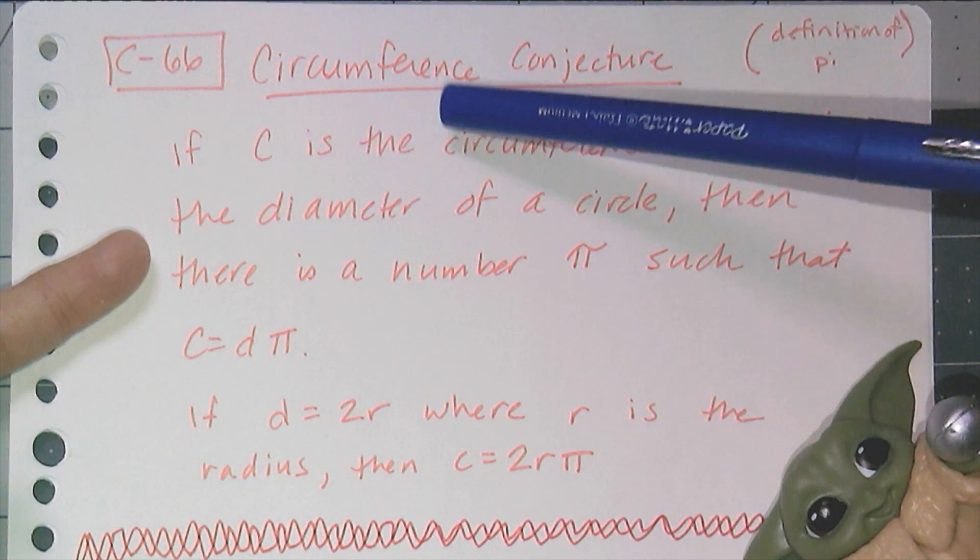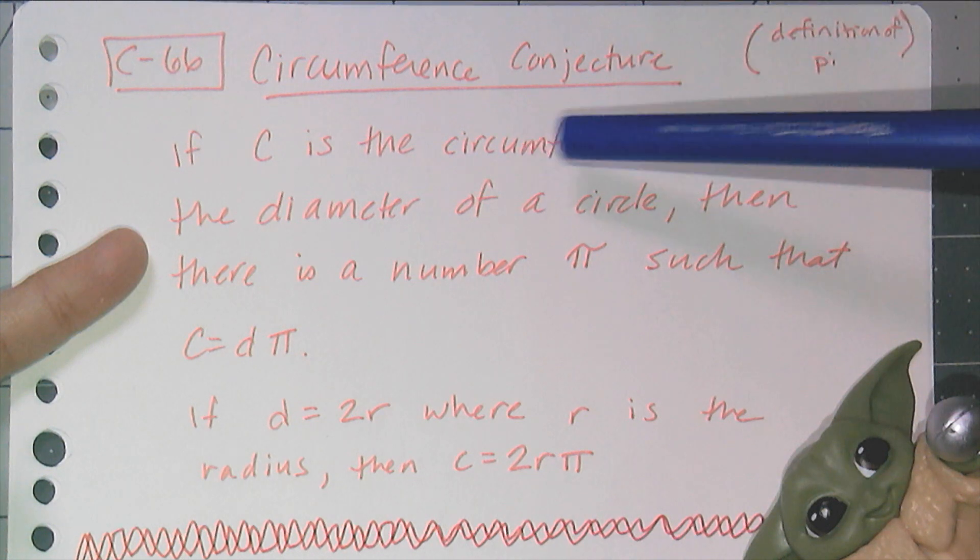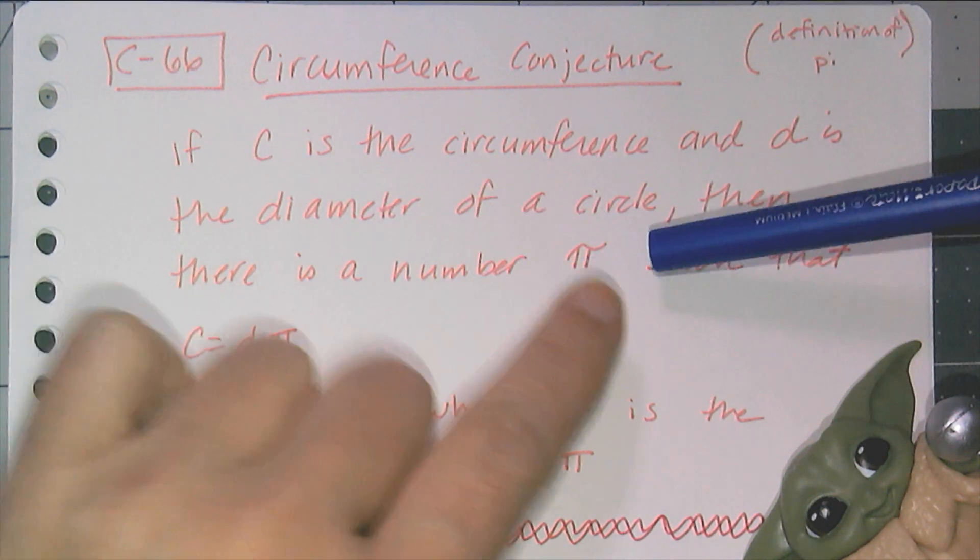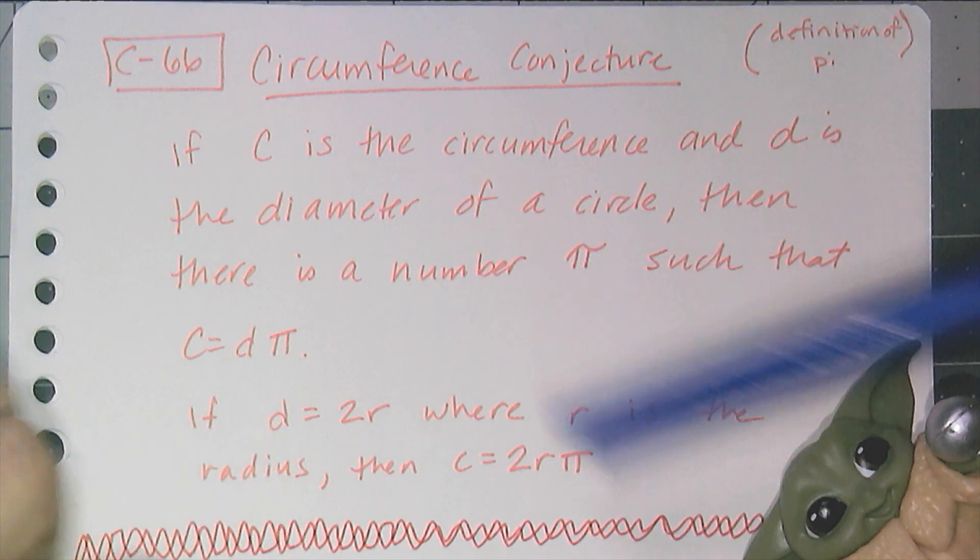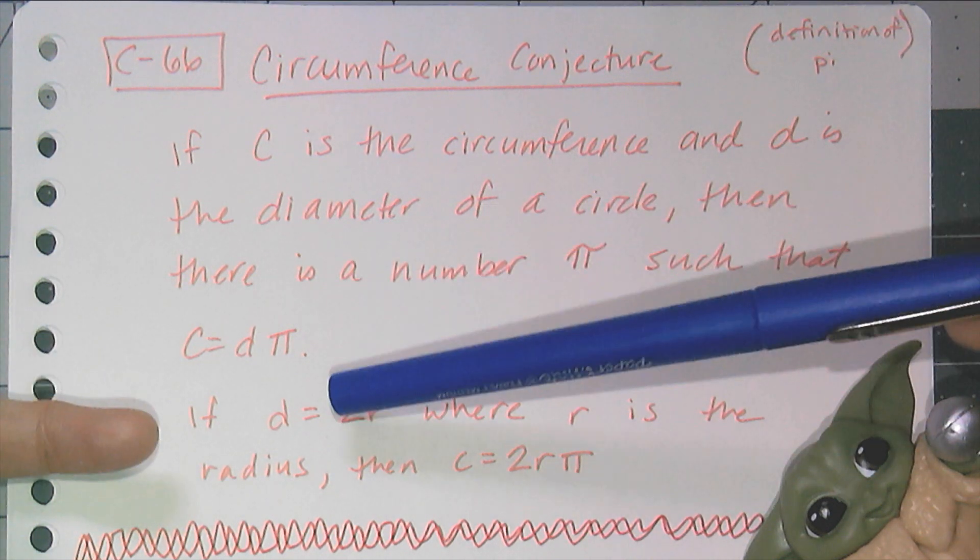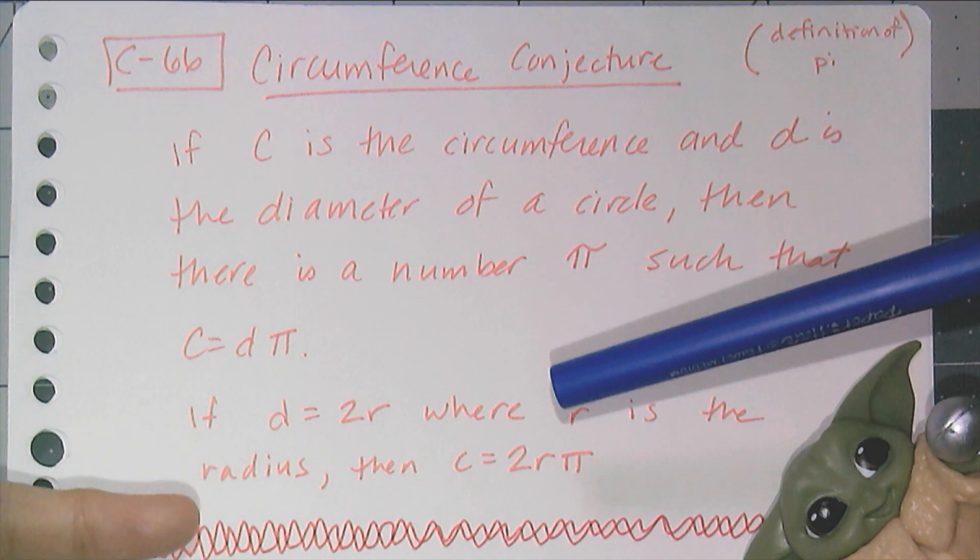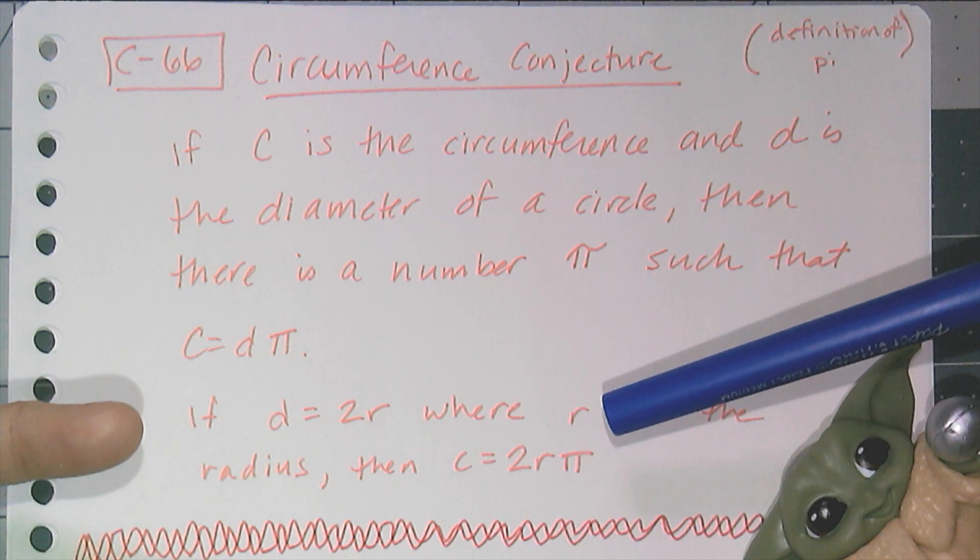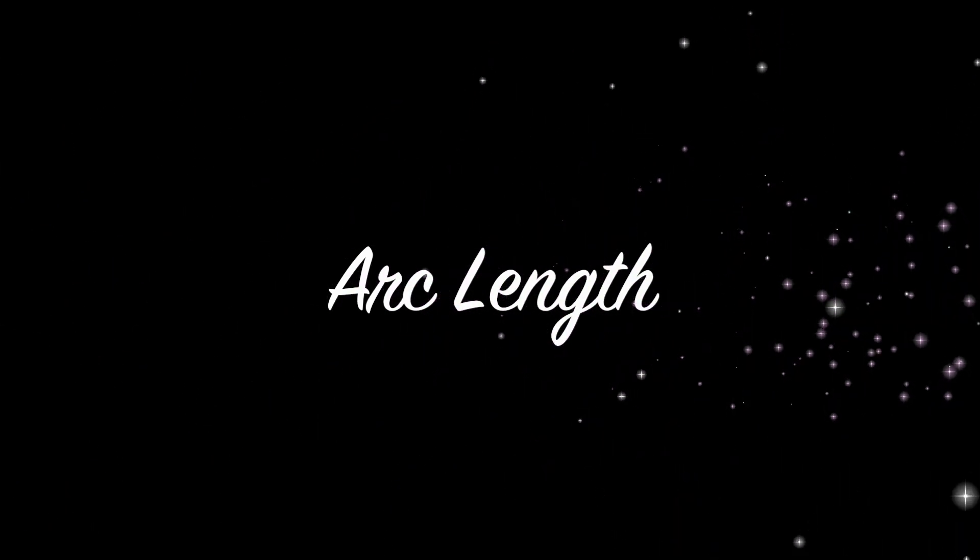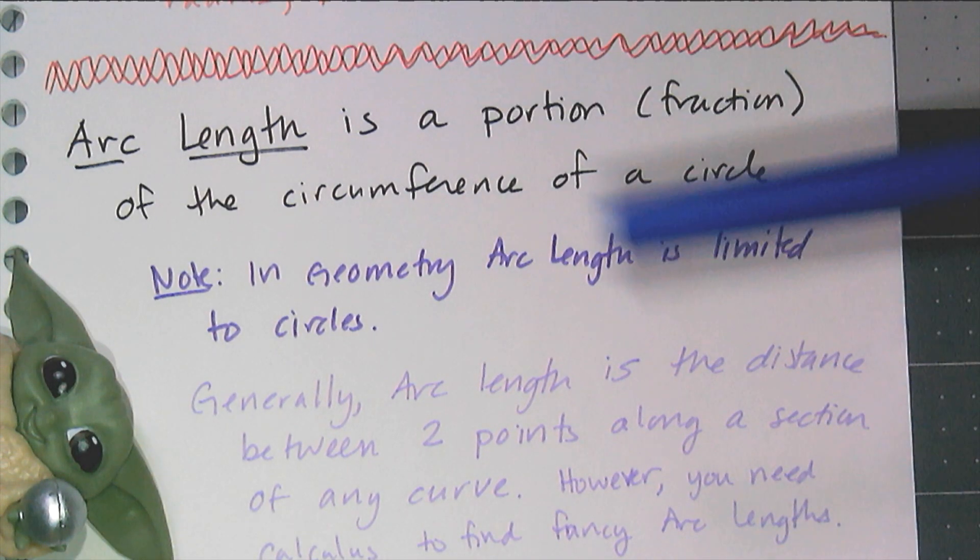Now let's actually go to the conjecture for circumference. It is C66, the circumference conjecture, and it's really the definition of pi. It says: if C is the circumference and d is the diameter of a circle, then there is a number pi such that C equals dπ. And then we have the alternate: if d equals 2r when we're given the radius r, then the relationship between pi, the radius, and the circumference is C equals 2rπ.